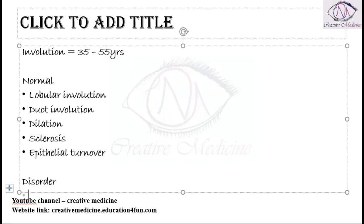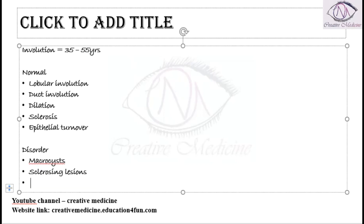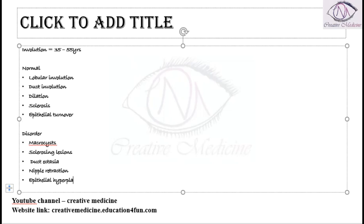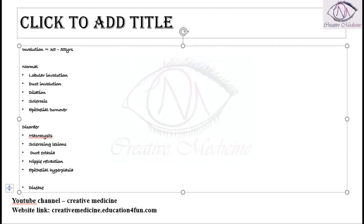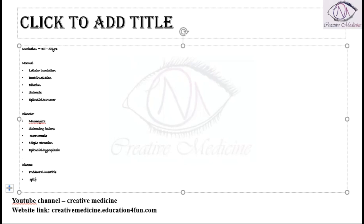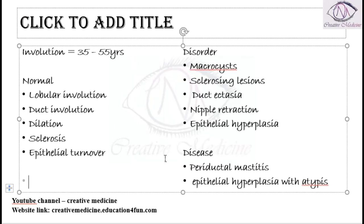The disorders in involution include macrocysts, sclerosing lesions, duct ectasia with nipple retraction, and epithelial hyperplasia. The diseases in involution include periductal mastitis and epithelial hyperplasia with atypia (ATP). These are the different diseases which occur in the involution part of the ANDI classification — that is, Aberrations in Normal Development and Involution.